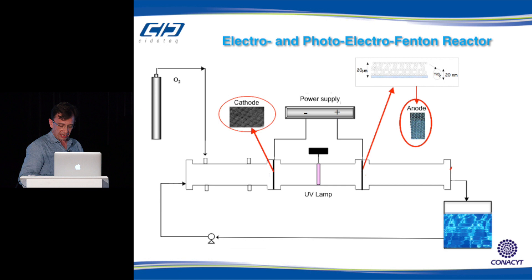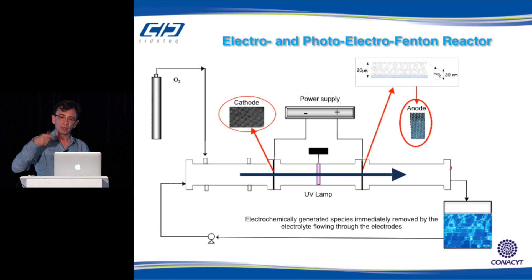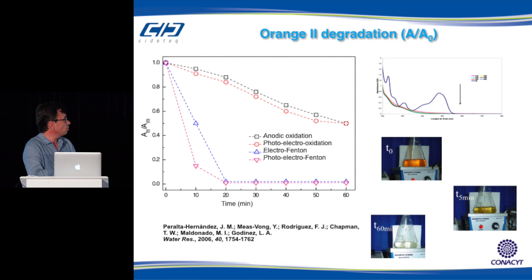We prepared a flow-through reactor with the electrolytic solution flowing through the electrodes—a carbon cloth cathode and an anode of carbon cloth coated with titanium dioxide, with a UV lamp. This removed the hydrogen peroxide being generated on the cathode surface. For an Orange II degradation experiment measuring absorbance A(t)/A(0), anodic oxidation or photoelectrooxidation alone showed one degradation curve. Adding iron gave the electro-Fenton reaction, and adding UV light gave a faster kinetics with the photoelectro-Fenton approach.